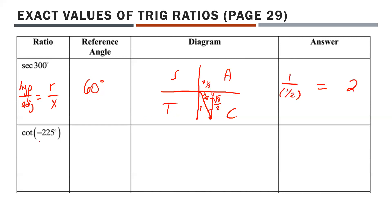Let's do another example: cotangent of negative 225 degrees. A negative angle is annoying, so find a coterminal angle by adding 360 — that gives us cotangent of 135 degrees. That's way easier to visualize. I can tell right away that's in quadrant 2 with a reference angle of 45 degrees.